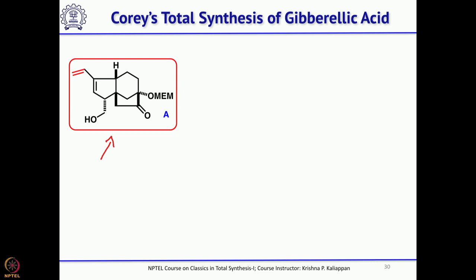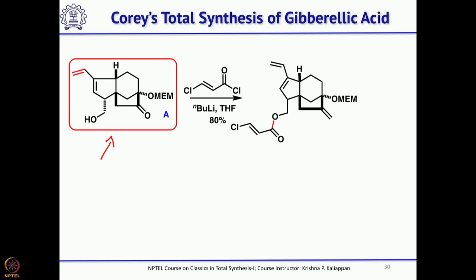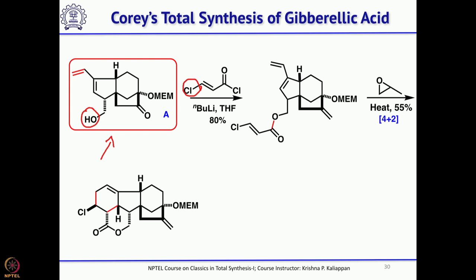Looking at molecule A, you can see there is already a diene, so what one has to do is attach the dienophile. Corey added an acid chloride having a chloride at the beta position. First, he deprotonated the OH with butyl lithium and then carried out the acylation. The key intramolecular 4+2 cycloaddition reaction was done in the presence of propylene oxide, which acts as a proton sponge, giving very good yield of a pentacyclic compound.